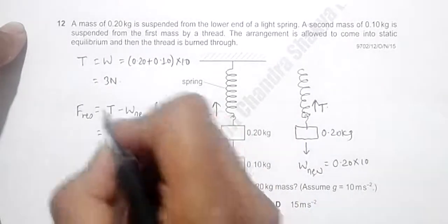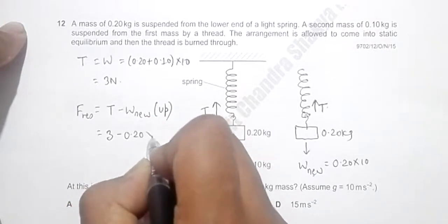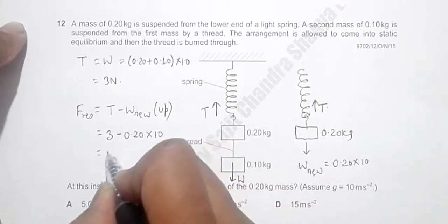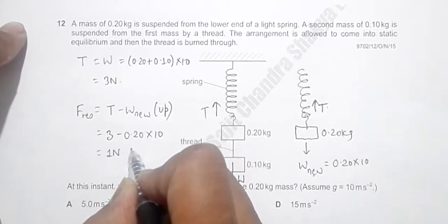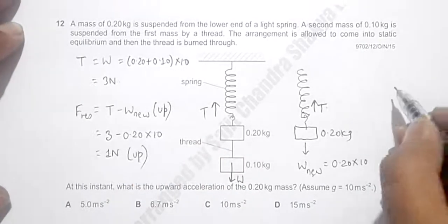And that's equal to T is already 3 Newton minus 0.20 into 10, so this equals 2, so it is 1 Newton and this is in upward direction.